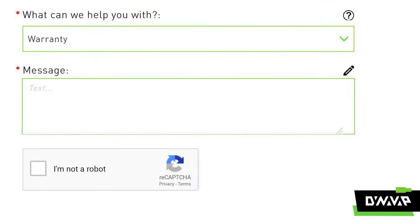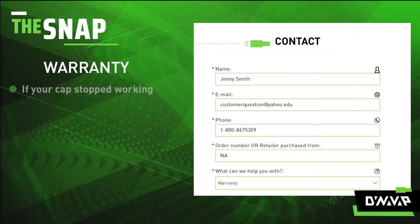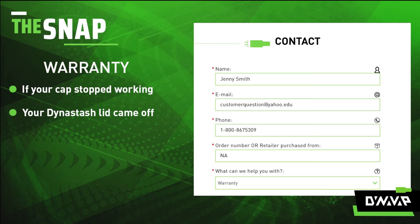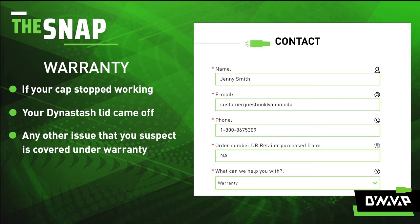And lastly, "Warranty." If your cap stopped working or your DynaStash lid came off, or another issue that you suspect is covered under warranty, let us know by selecting this option.